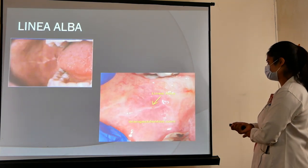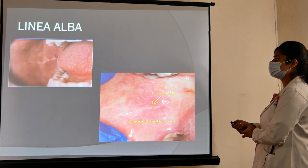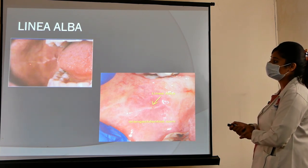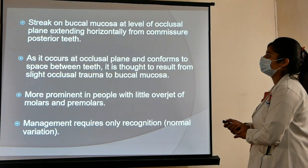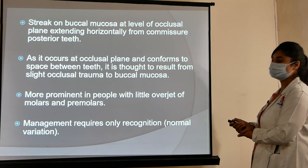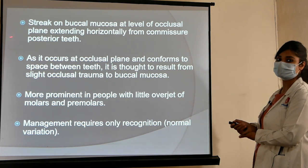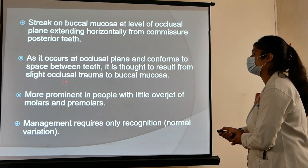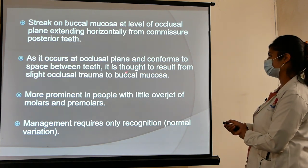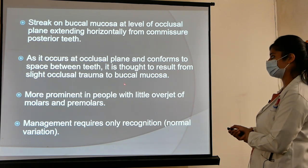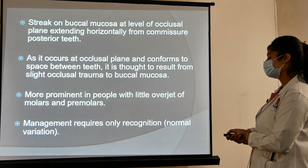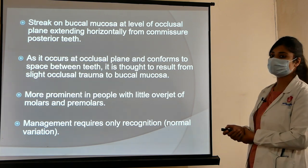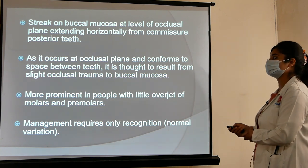Linea alba is a whitish line present on the buccal mucosa at the level of the occlusal plane, extending horizontally from the commissure to the posterior teeth. It is thought to result from slight occlusal trauma to the buccal mucosa and is more prominent in people with little overjet of premolars and molars. Management requires only recognition, as it is a normal variation that does not undergo any malignancy.